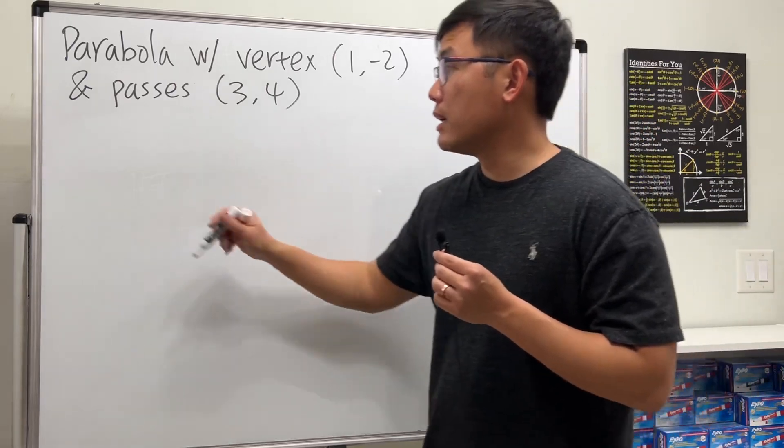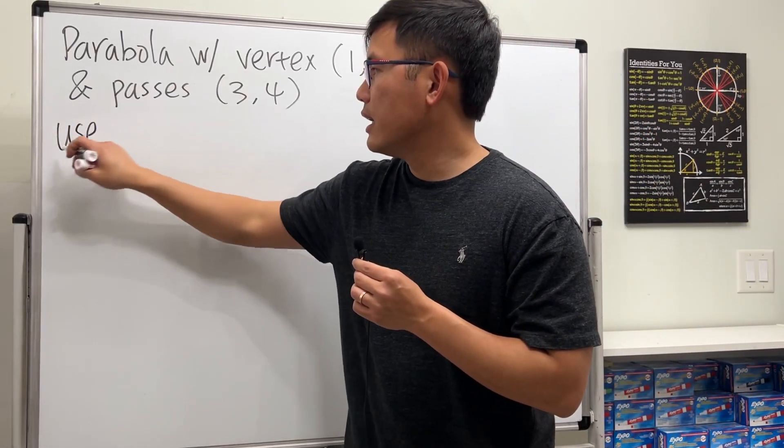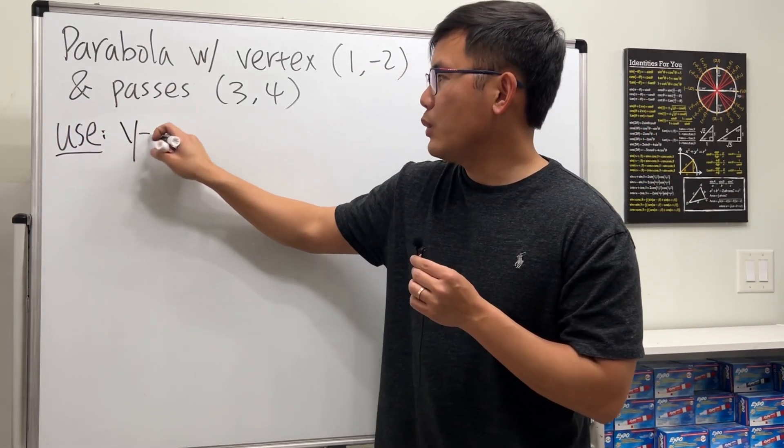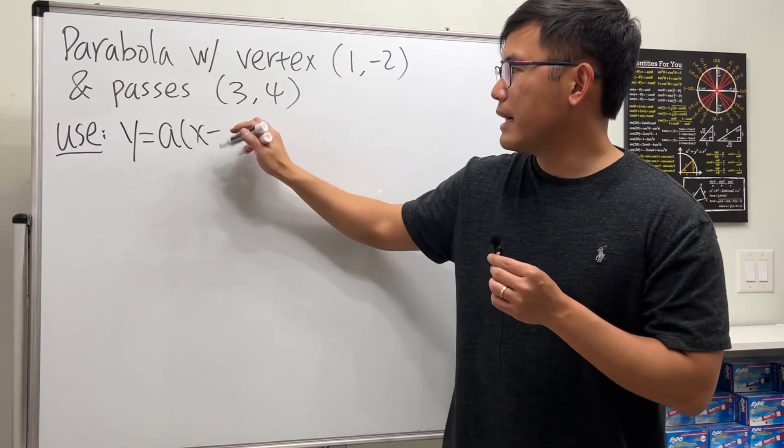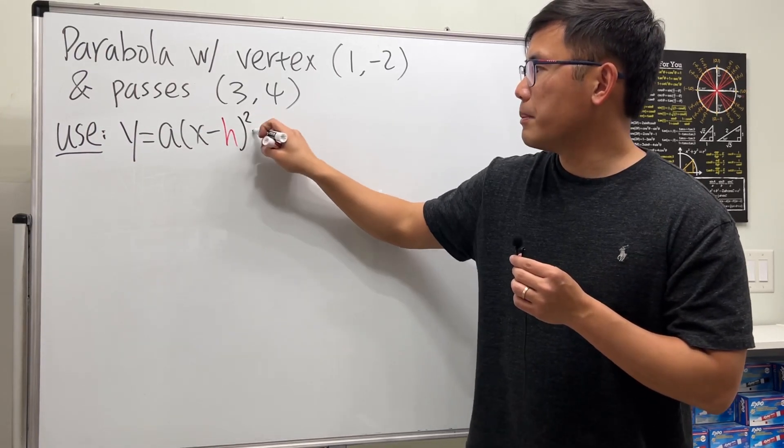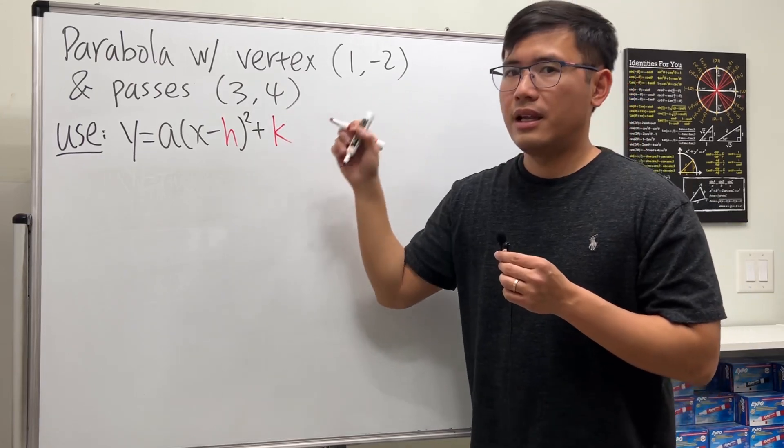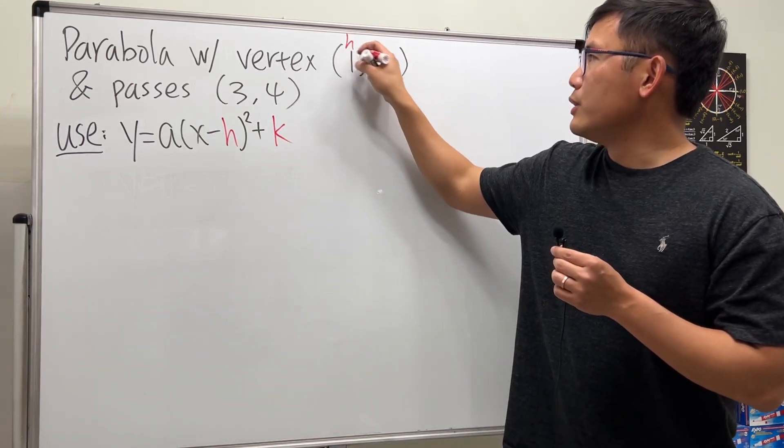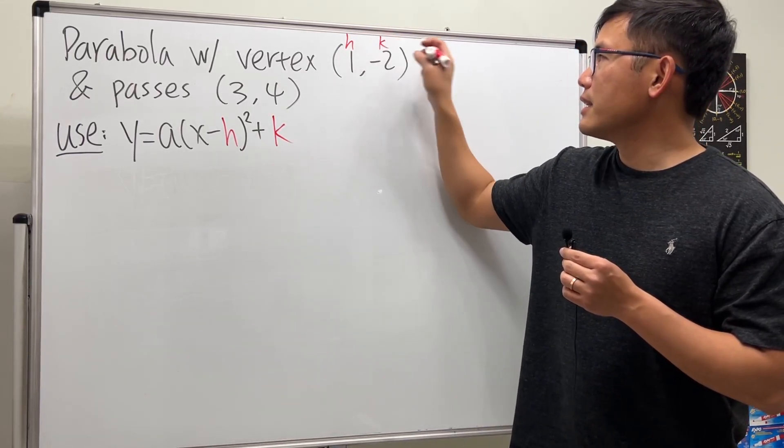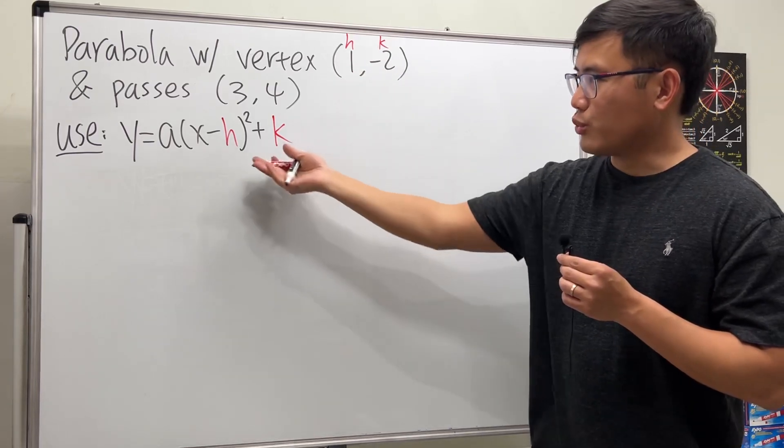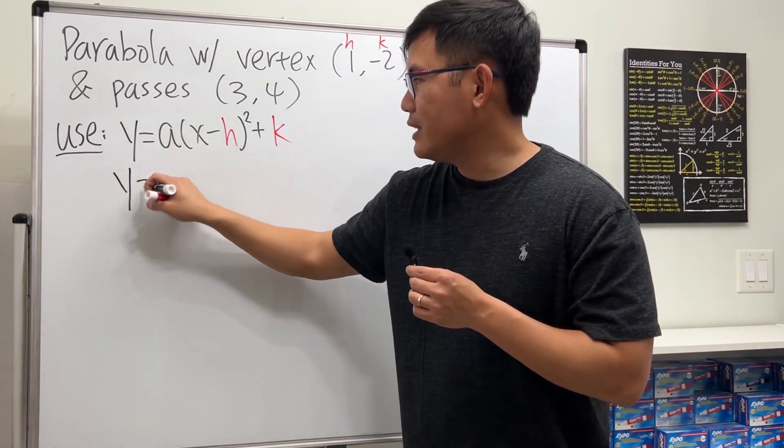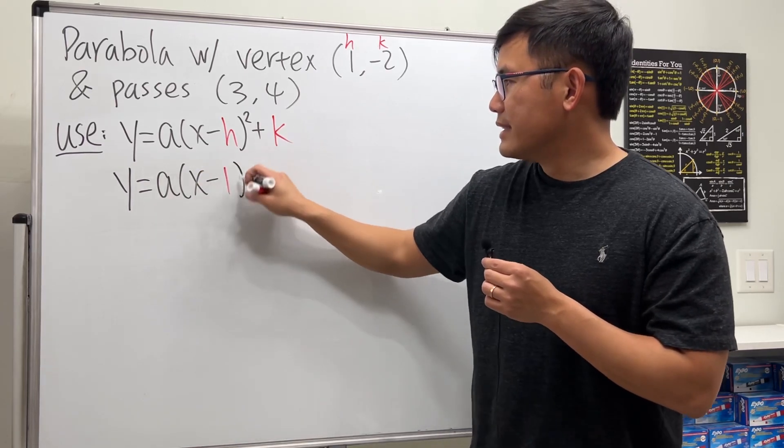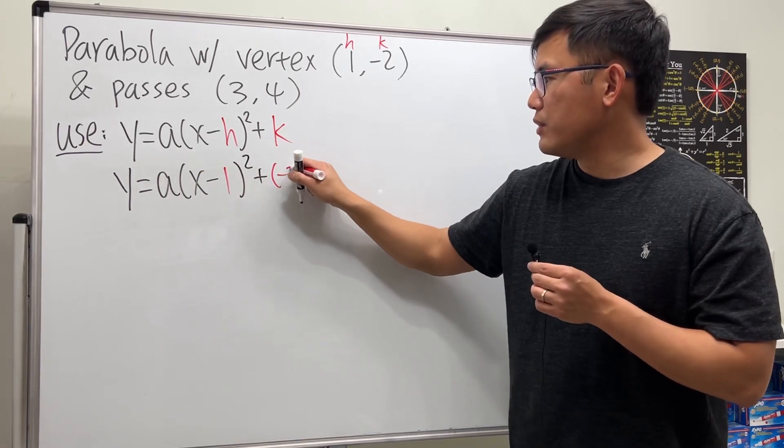So let's go ahead and begin with y equals a times x minus h squared plus k. The 1 is the h and the negative 2 is the k, so we have y equals a times x minus 1 squared plus negative 2.